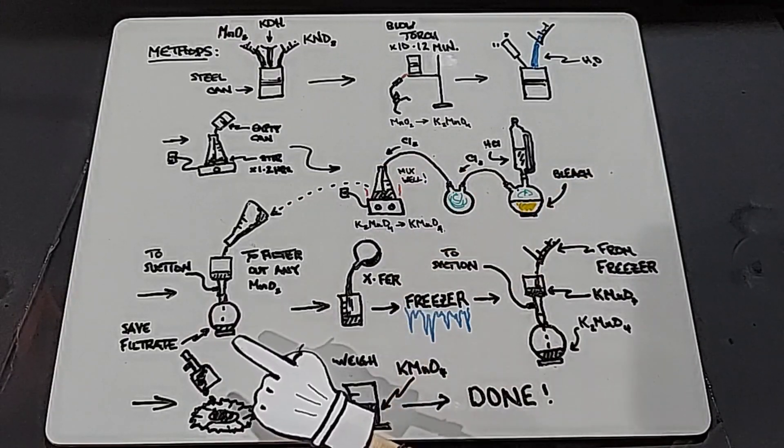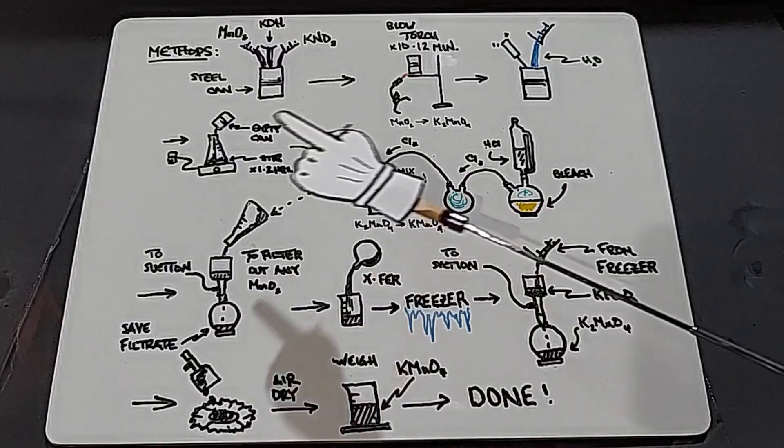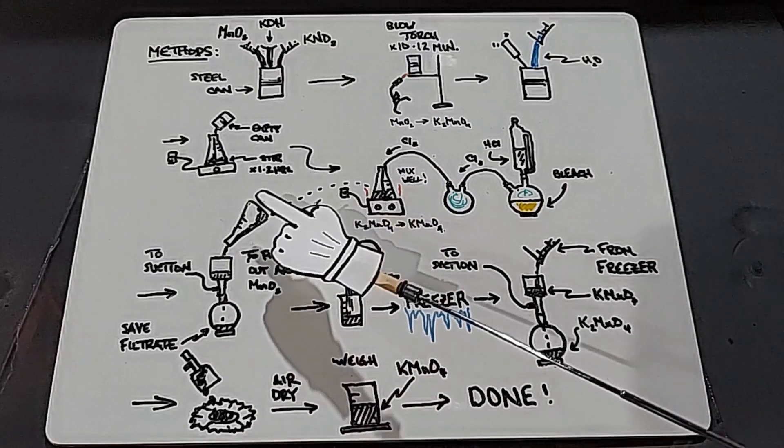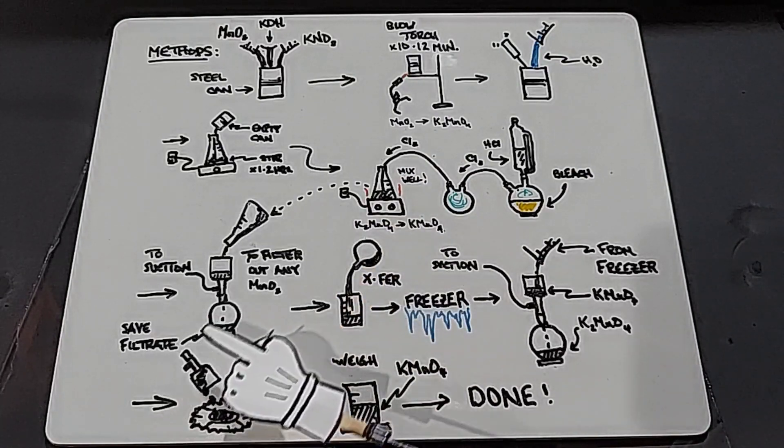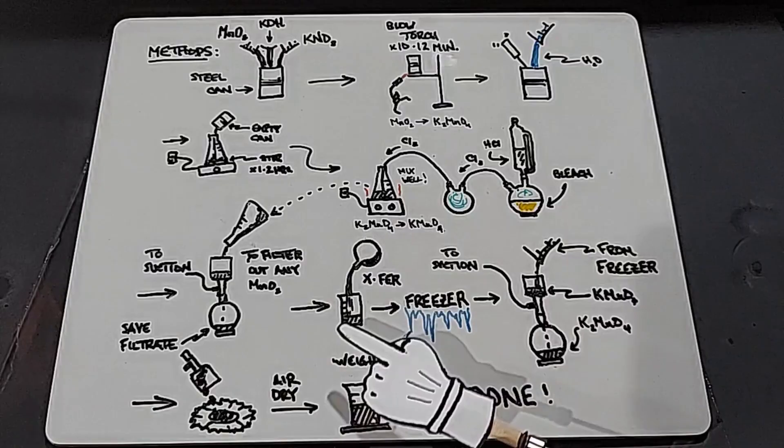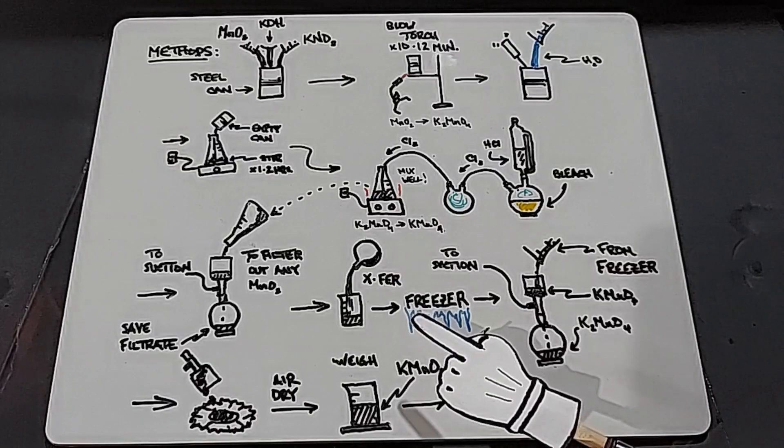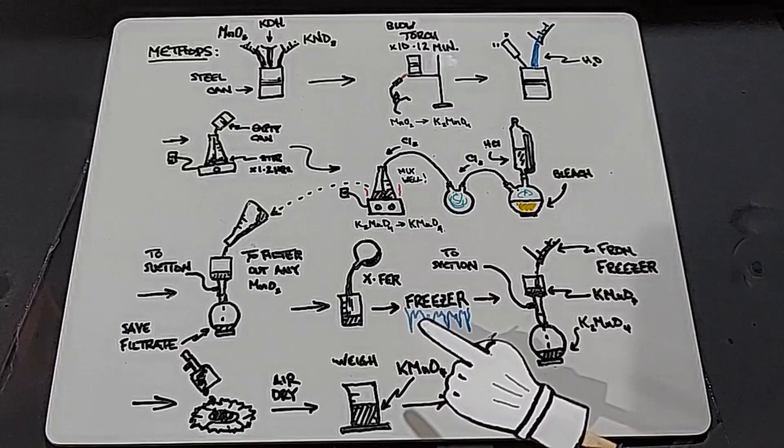After this has been stirring for a while to make sure all the chlorine gas is mixed in well, I'm going to suction filter it and save the filtrate. At this point, we're going to suction out any manganese dioxide that might still be unreacted. Then we're going to transfer the filtrate into a beaker and put it in the freezer. As I said earlier, the potassium permanganate will come out of solution first.